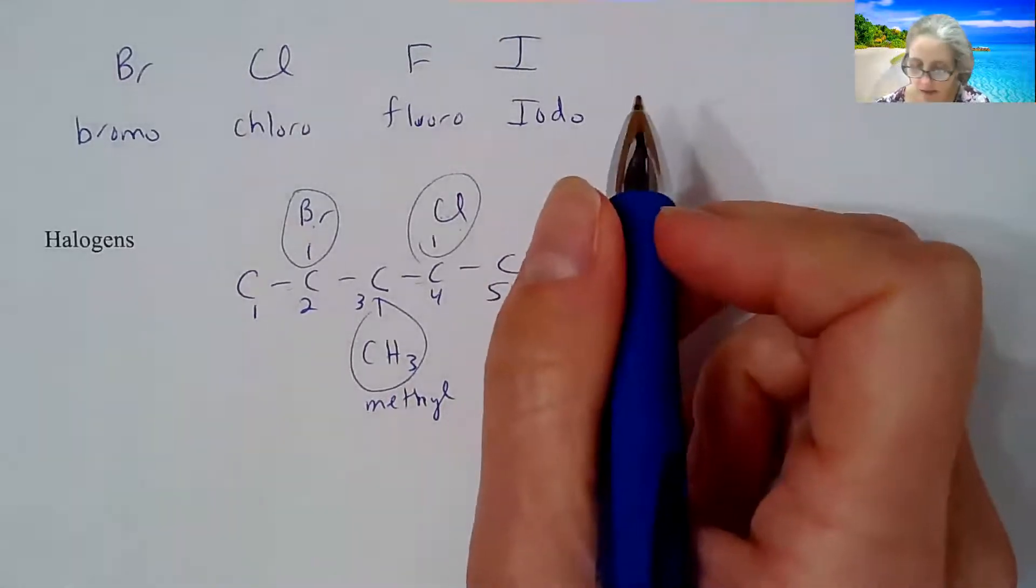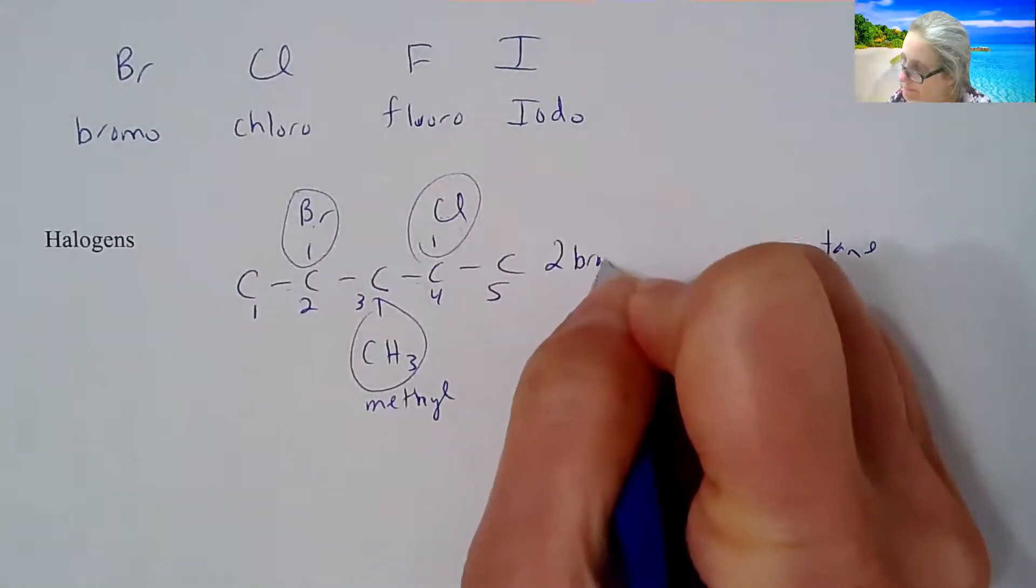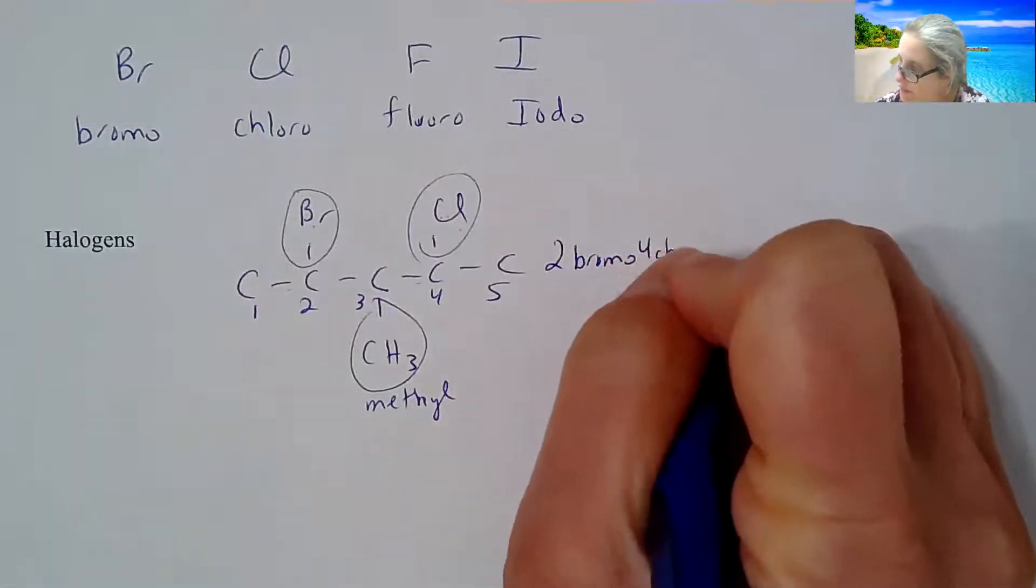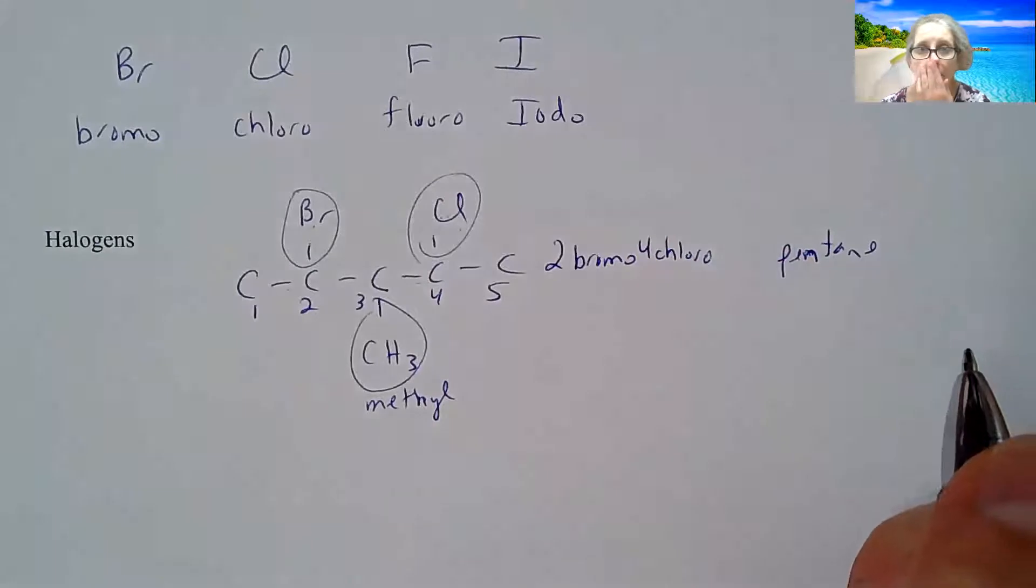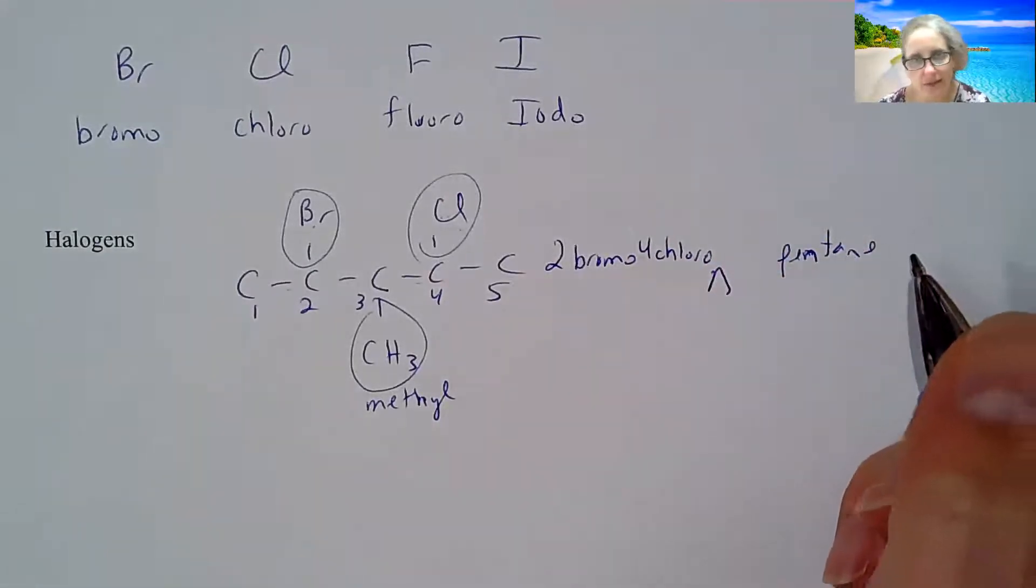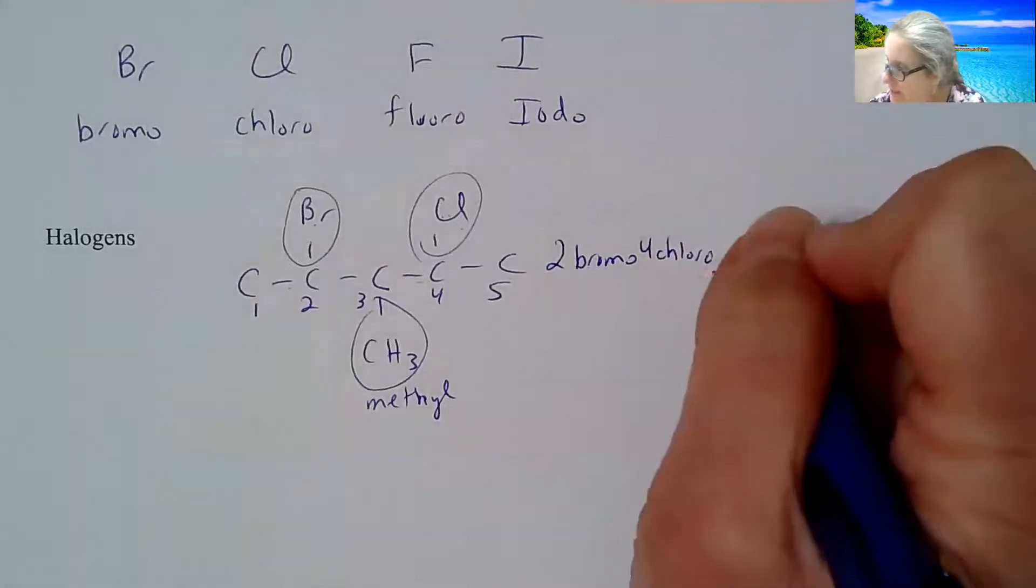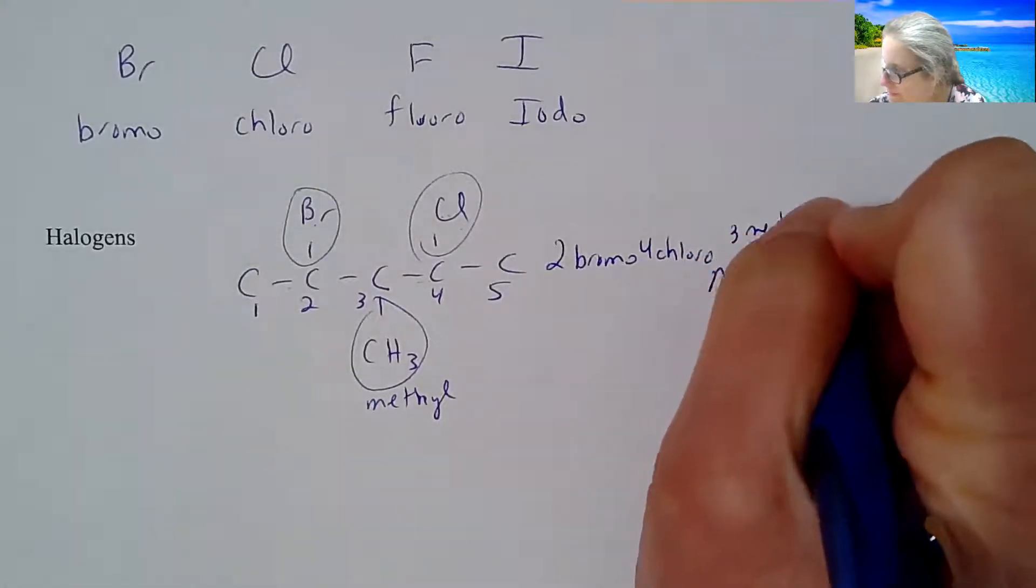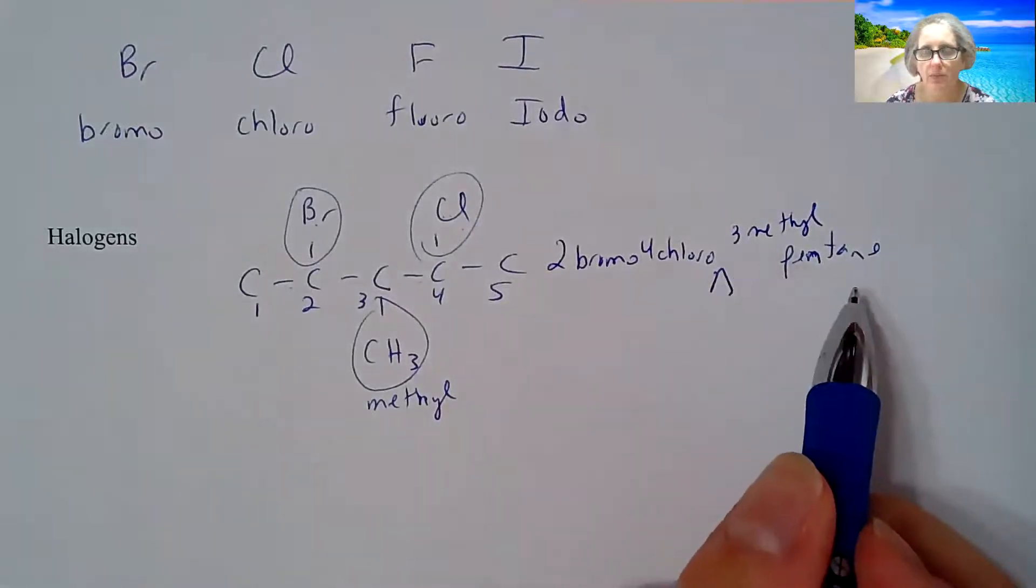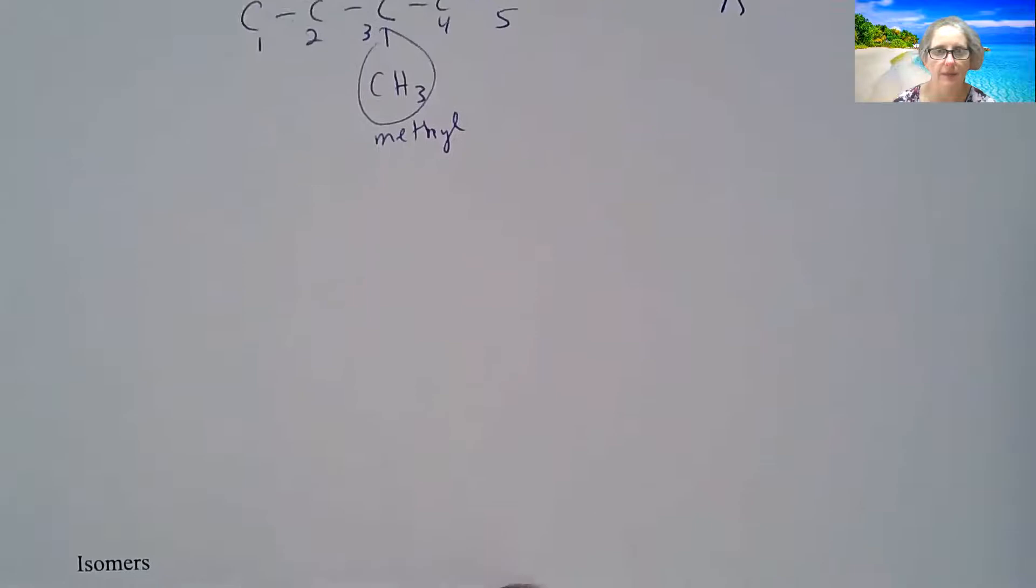So this is going to start with a 2-bromo. Then alphabet wise, it's going to go 4-chloro. So it doesn't go number wise, it goes alphabet. And if you run out of space, do like a little carrot thing, because I do this all the time. And then do a 3-methyl. So 2-bromo, 4-chloro, 3-methylpentane is going to be the name of this molecule.